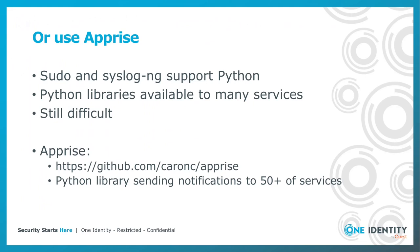As I mentioned earlier, both sudo and syslog-ng support Python. There are many Python libraries available for the different notification services, so you can support even more services using Python than with the HTTP destination — but it's still difficult, as you need to implement each of these destinations separately. Or you can use Apprise. It's on GitHub and it's part of quite a few distributions, so it's easy to get started with it.